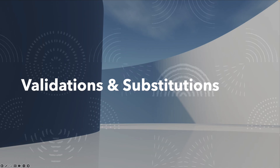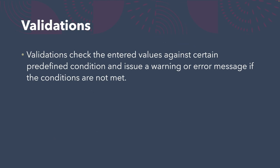In this session we'll explore the critical features of validations and substitutions in the Project System module. Validations and substitutions play an essential role in ensuring data integrity and compliance with business requirements. Validations are basically a tool to check entered values against certain predefined conditions and issue a warning or error message if the conditions are not met — like writing an if-else statement where you put conditions in the if part and issue a warning or error if not met.